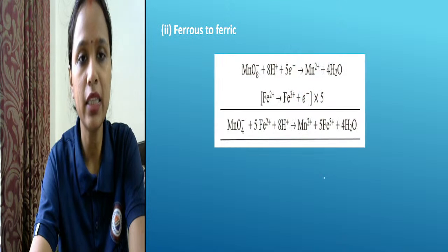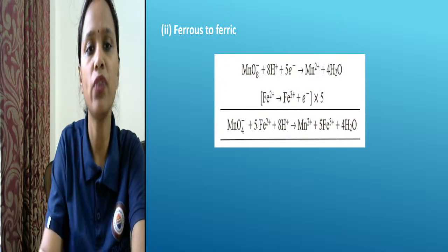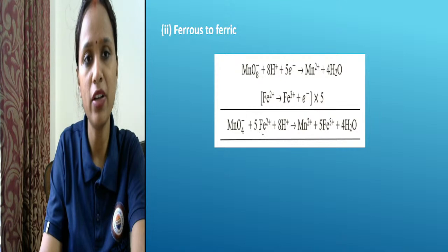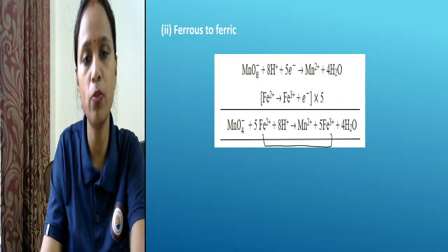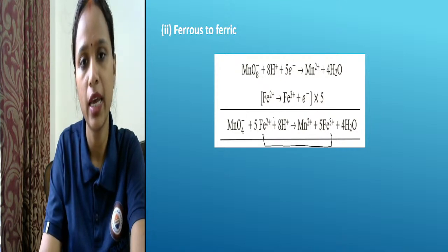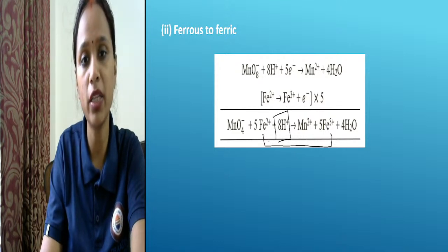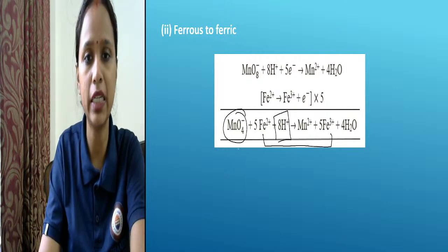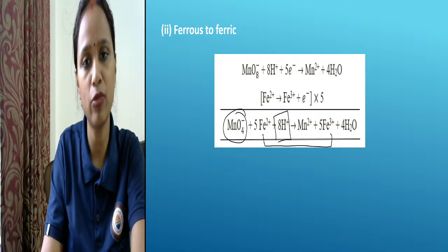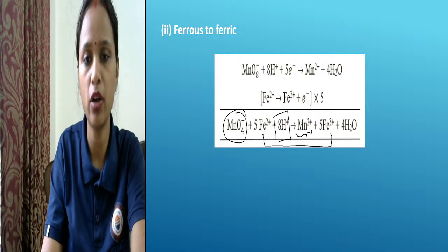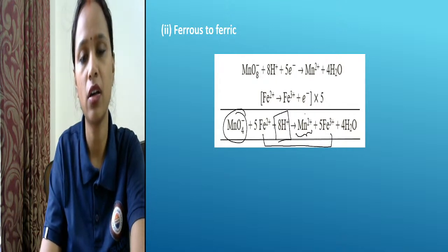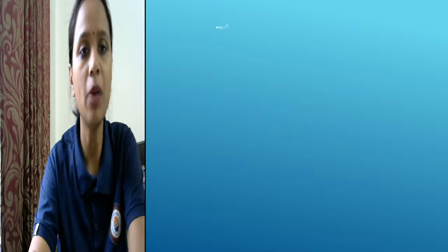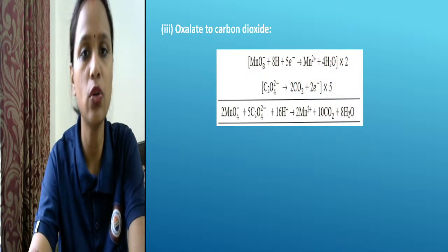Next, in acidic medium, ferrous (Fe²⁺) converts to ferric (Fe³⁺). This is the same reaction we saw for potassium dichromate. The reaction is exactly the same; the salt produced is a manganese salt. Then oxalate is oxidized to carbon dioxide.